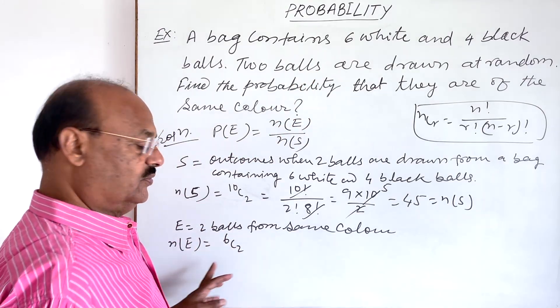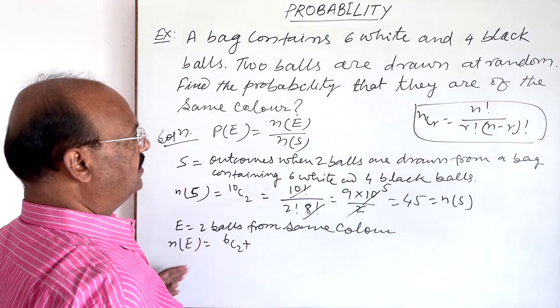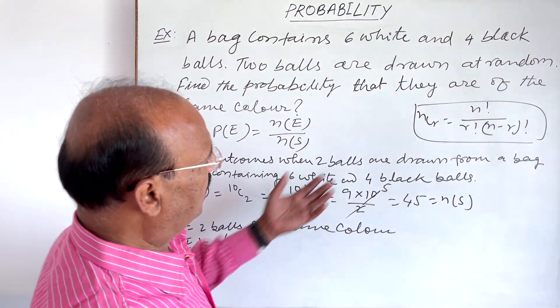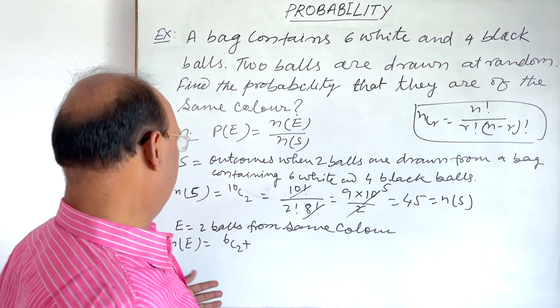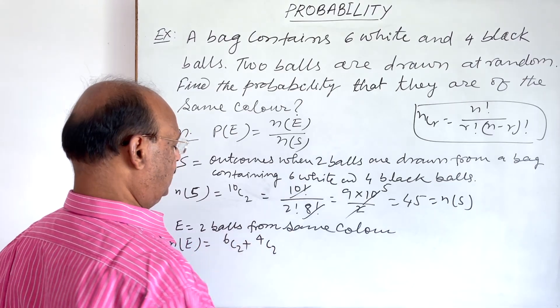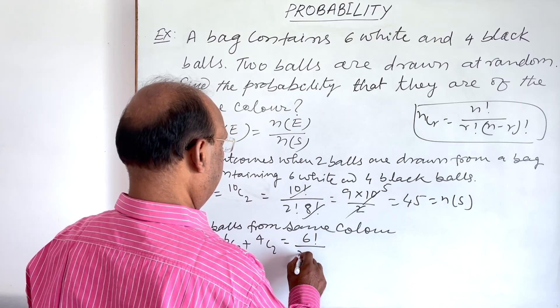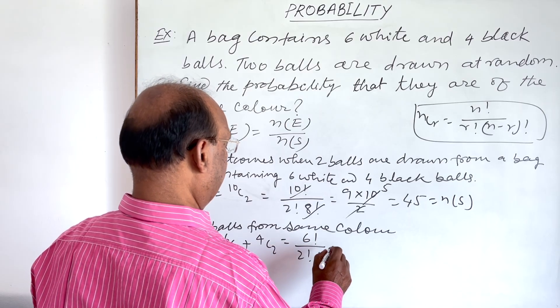Plus, again same color is black, so we are getting two balls from black, so that is 4C2. Let us evaluate it. So 6C2 is six factorial by two factorial into four factorial, plus 4C2 is four factorial by two factorial into two factorial.